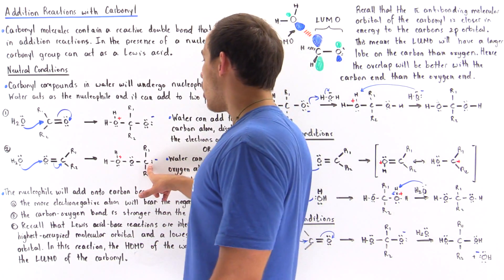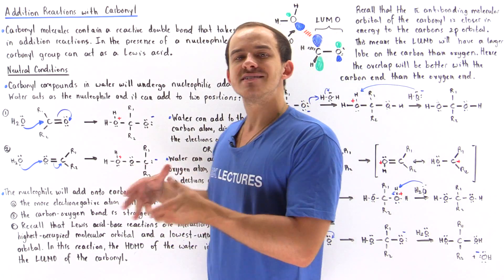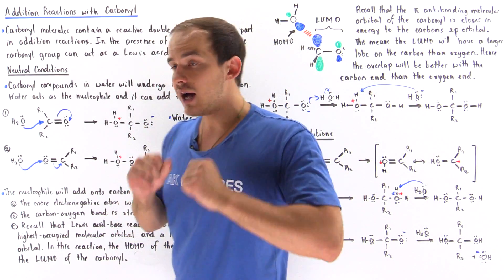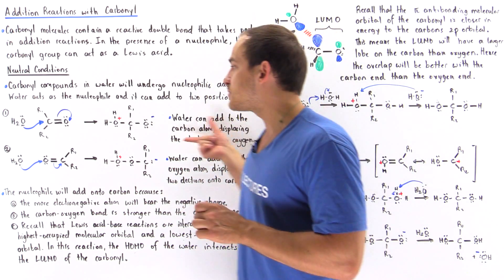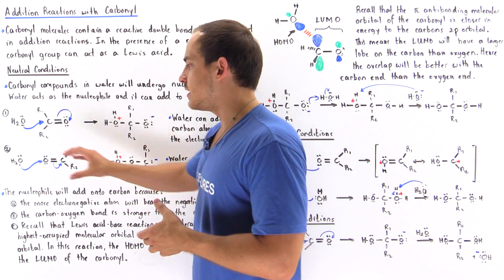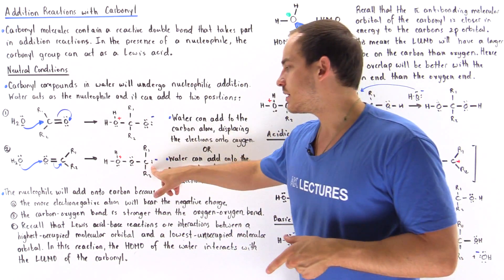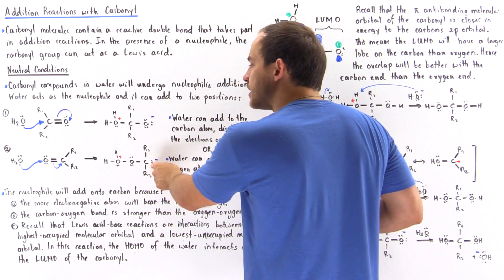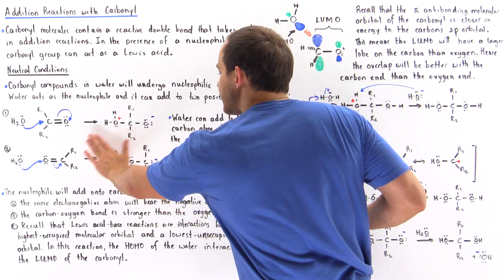That places a negative charge onto the carbon instead of the oxygen as in case one. The question is which one of these pathways is more likely. It turns out the nucleophile always adds on to our carbon, displacing the pi bond and creating this intermediate. There are three reasons why. The first reason has to do with electronegativity: oxygen is more electronegative than carbon, meaning oxygen will more readily bear the negative charge and will be more stable with a negative charge than the carbon.